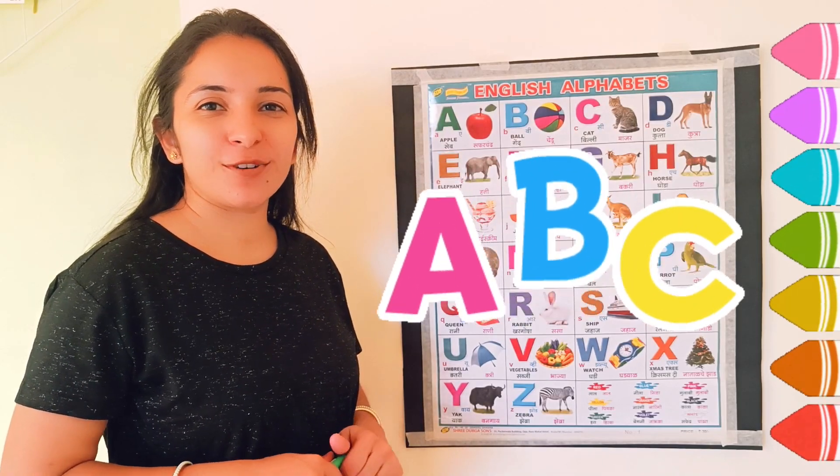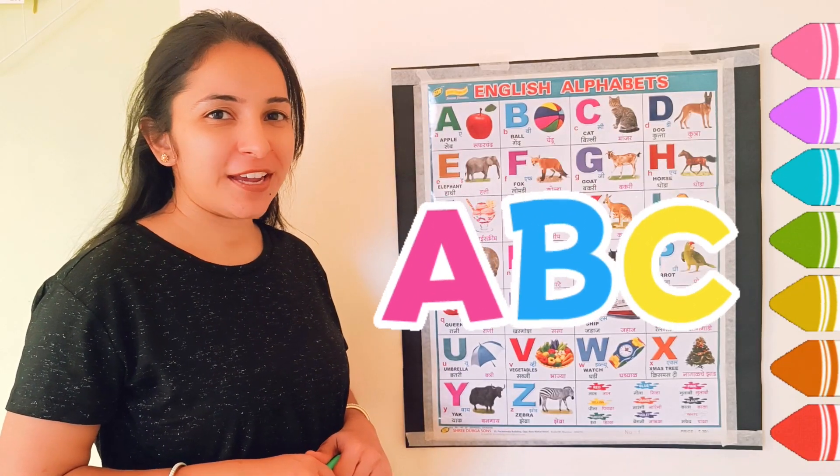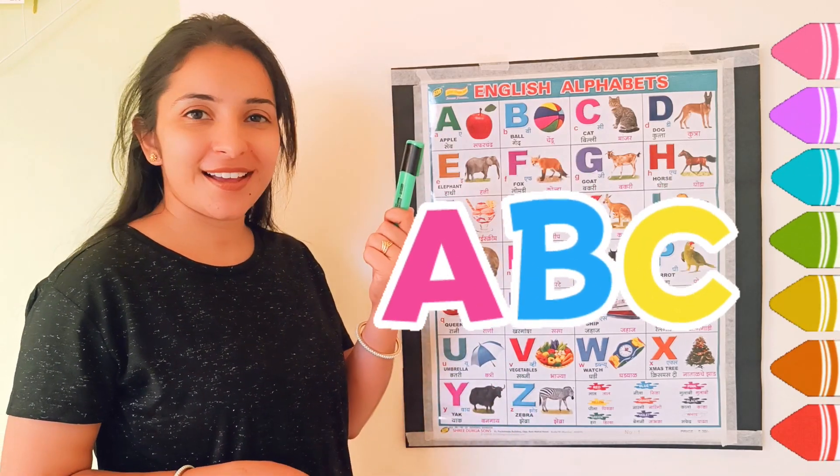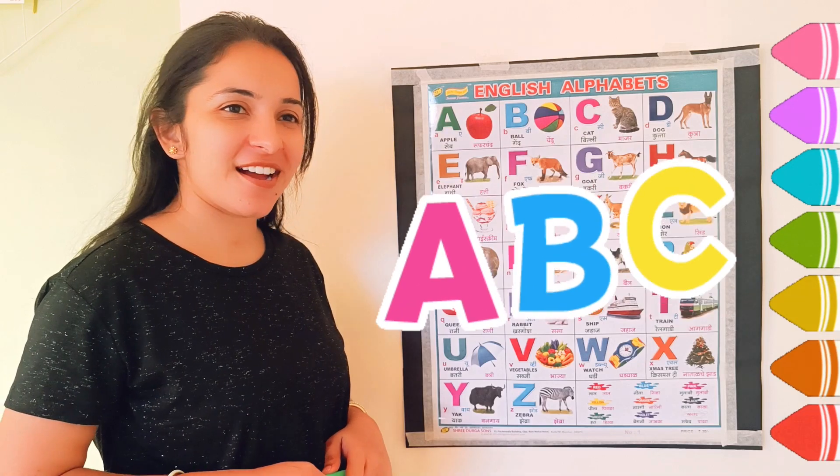Hello kids, welcome back to Kids Little Show. Today we will learn alphabet A to C with green color marker. So are you ready? Let's start.